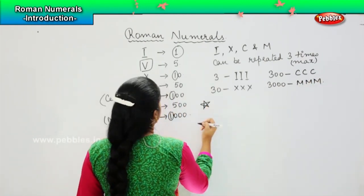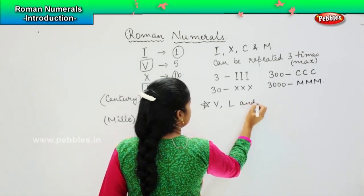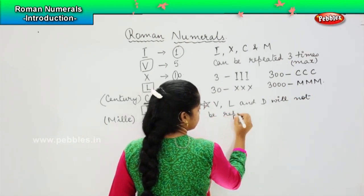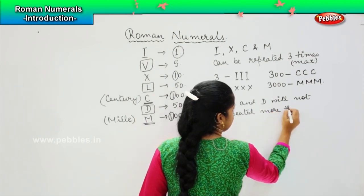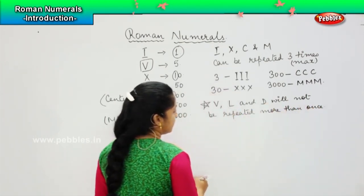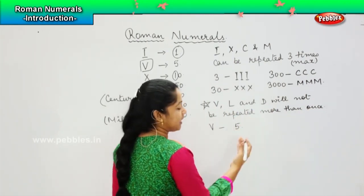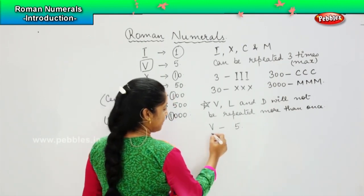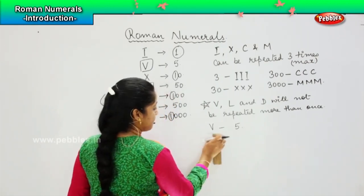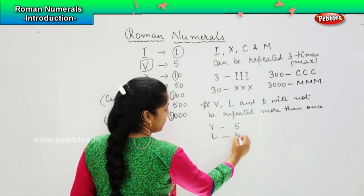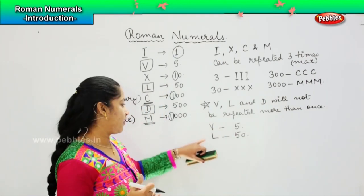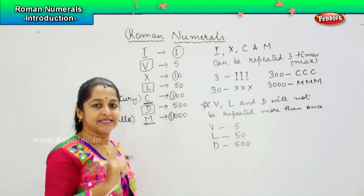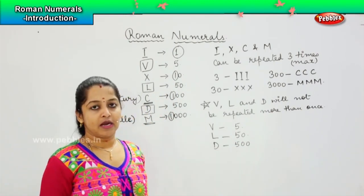Whereas the alphabets like V, L, and D will not be repeated more than once. Which means that if I write V, the value is 5. Now if I want to increase it, if I'm writing 6 and 7, I cannot put V two times or three times. It is wrong. Similarly, if I write 50, that is L, it will be only 50. So 60 and 70, I cannot repeat this L two times or three times. Similarly, if I want to write D which is 500, this D will represent only once. For 600 and 700, you cannot just increase the count.